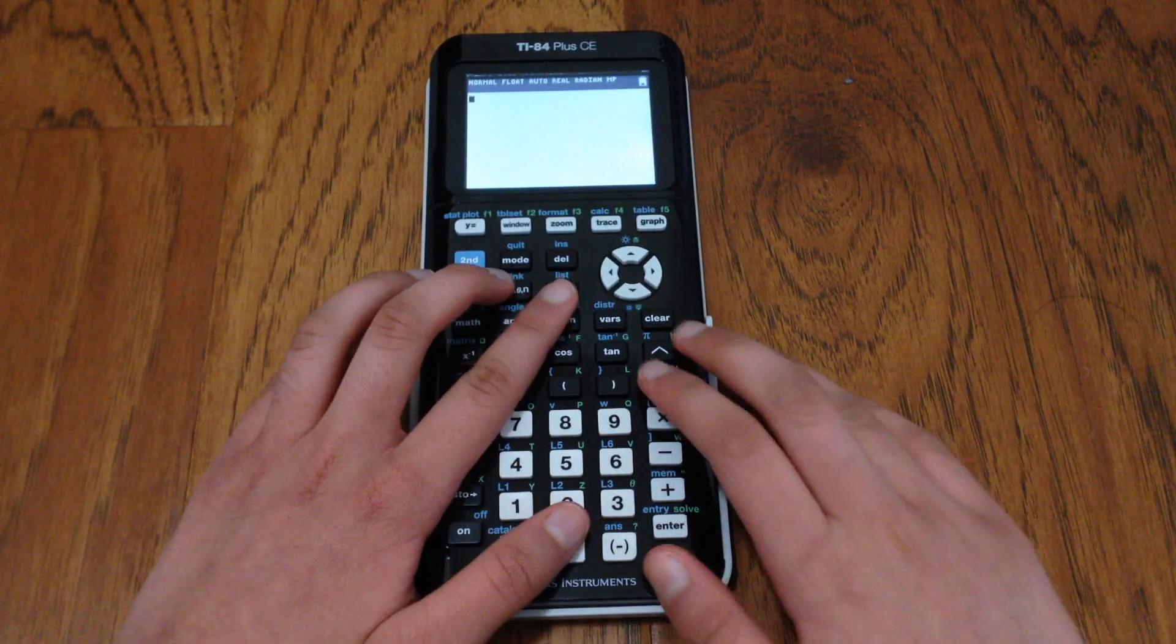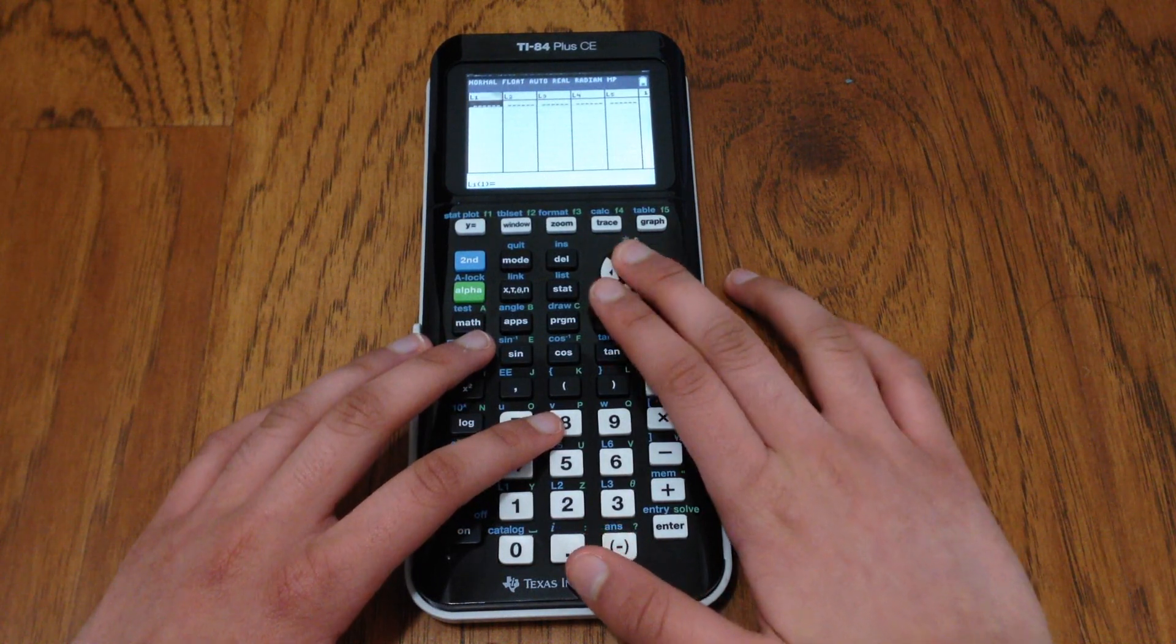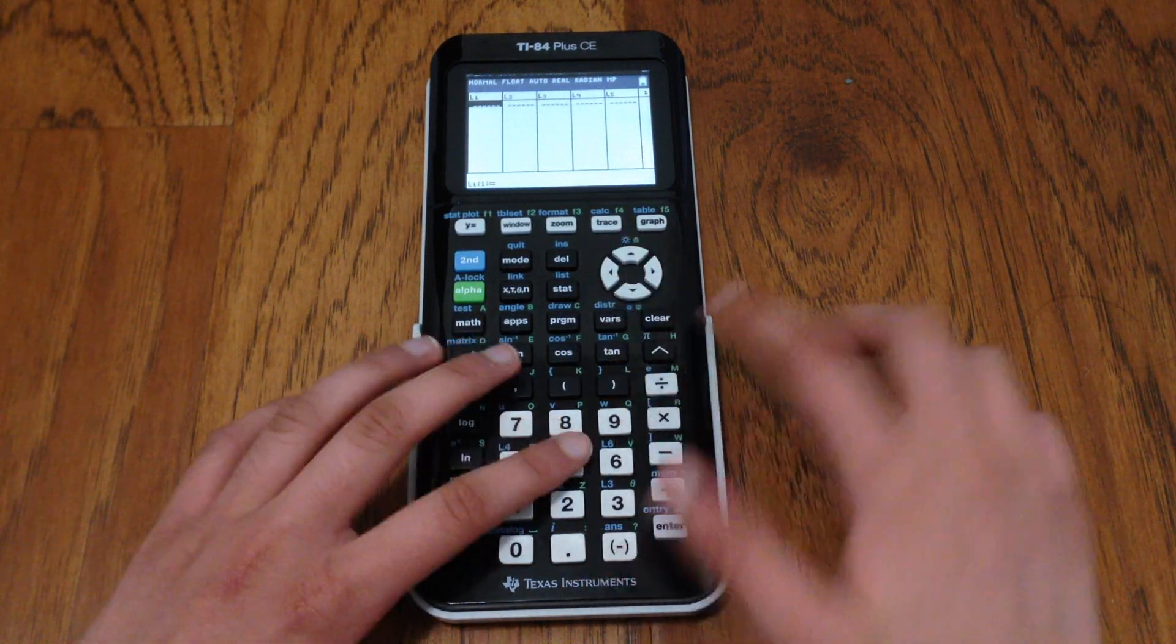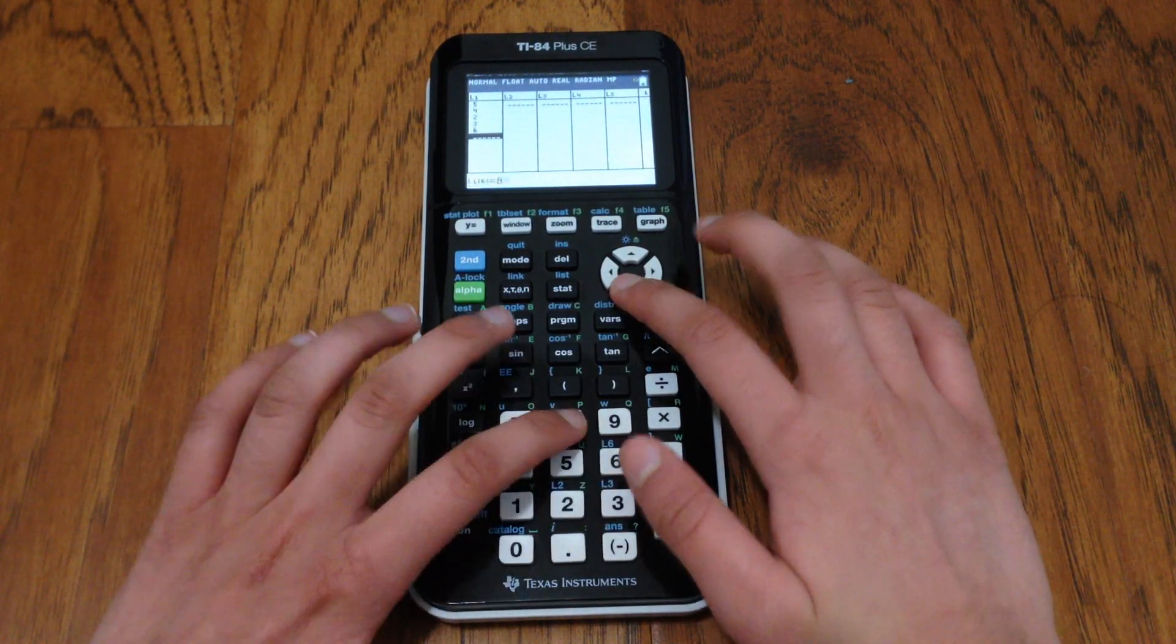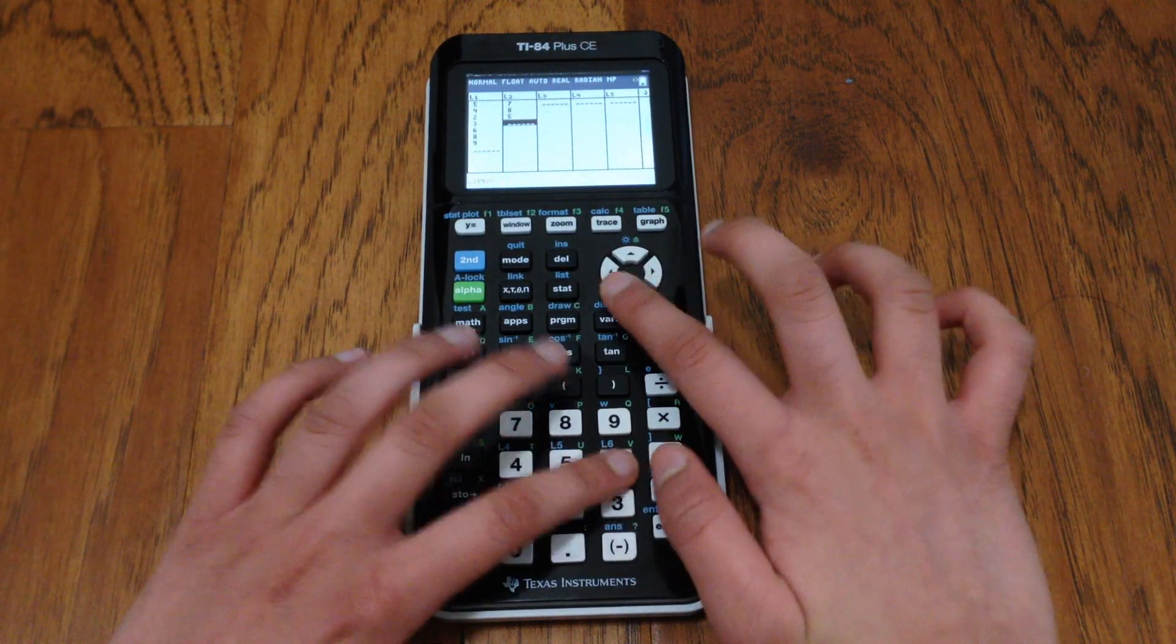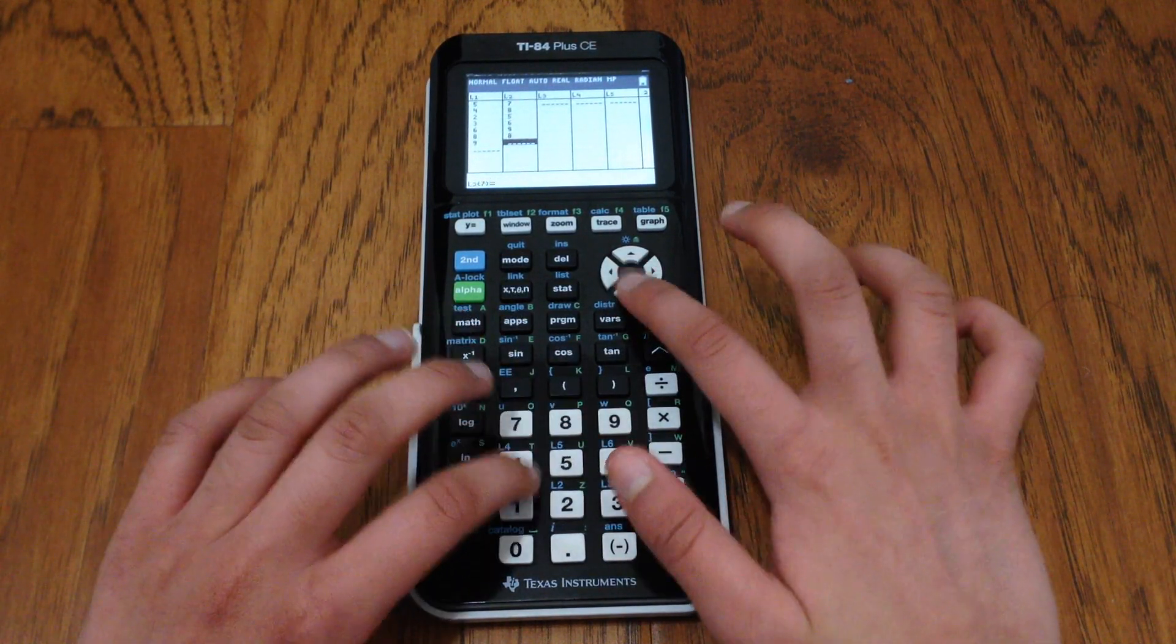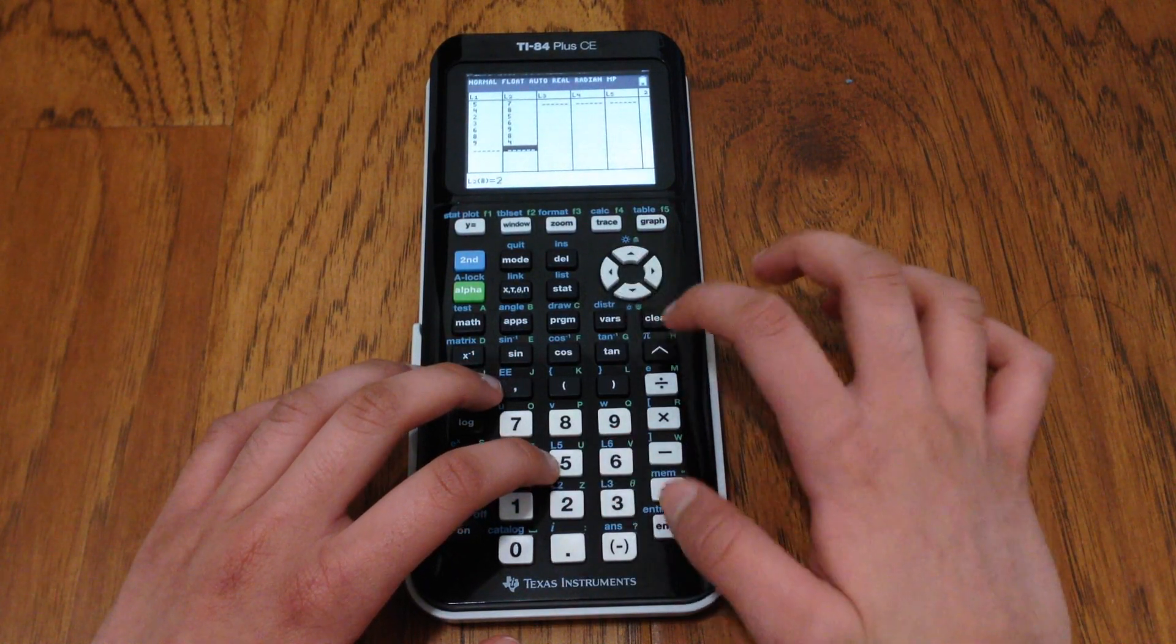So the way you can do that is by going to stat edit and making your lists here. I don't have anything in there right now so I'm just going to add some numbers: 5, 4, 2, 3, 6, 8, 9, 7, 8, 5, 6, 9, 8, 4.